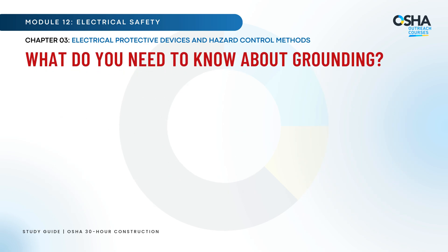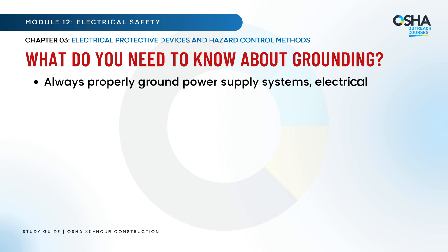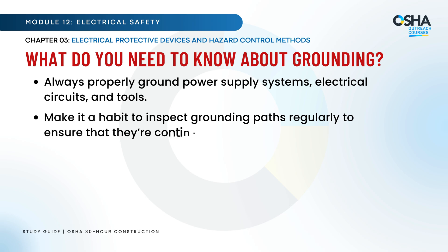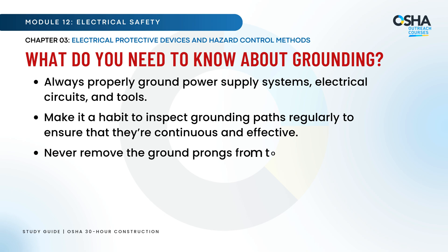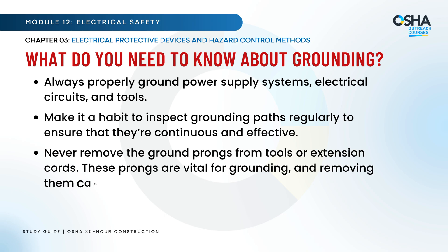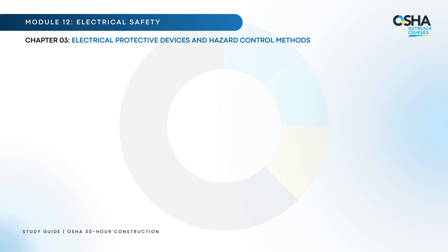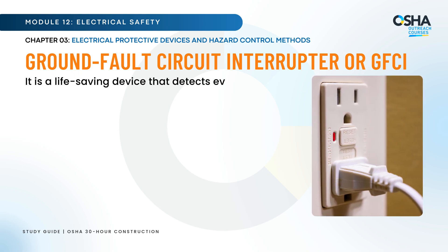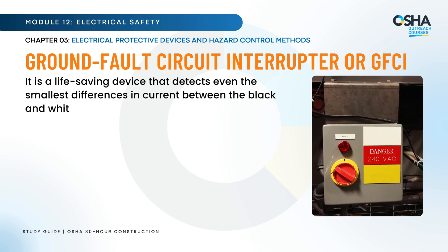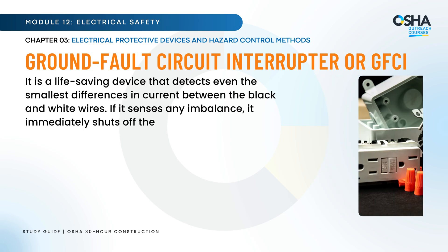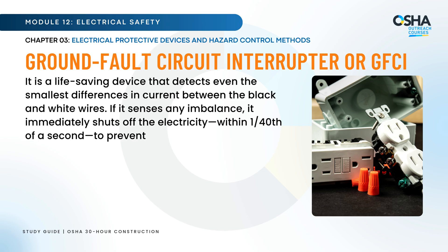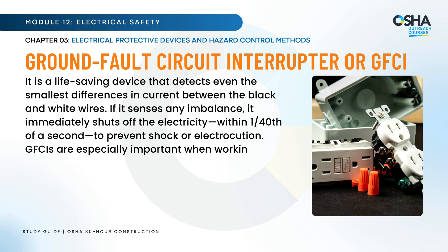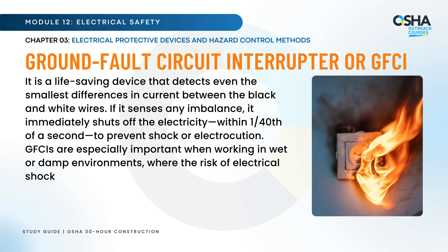What do you need to know about grounding? Always properly ground power supply systems, electrical circuits, and tools. Make it a habit to inspect grounding paths regularly to ensure that they're continuous and effective. Never remove the ground prongs from tools or extension cords — these prongs are vital for grounding, and removing them can put you at serious risk. Now let's discuss the ground fault circuit interrupter, or GFCI. It is a life-saving device that detects even the smallest differences in current between the black and white wires. If it senses any imbalance, it immediately shuts off the electricity within 1/40th of a second to prevent shock or electrocution. GFCIs are especially important when working in wet or damp environments, where the risk of electrical shock is much higher.